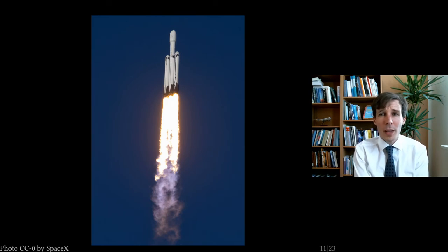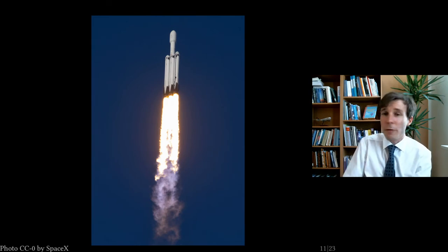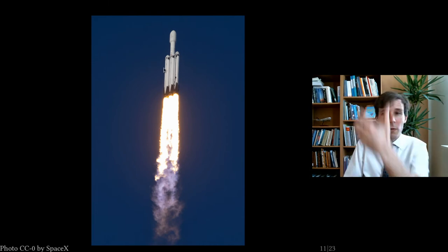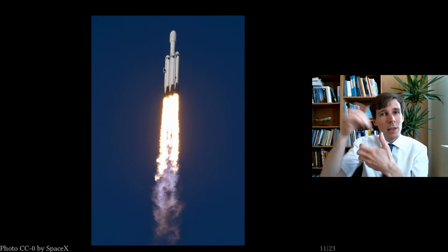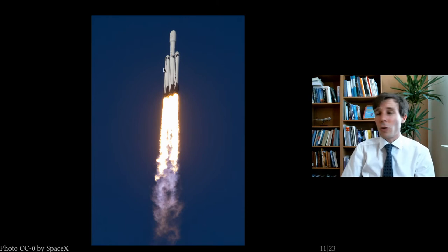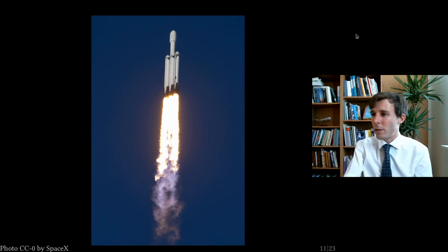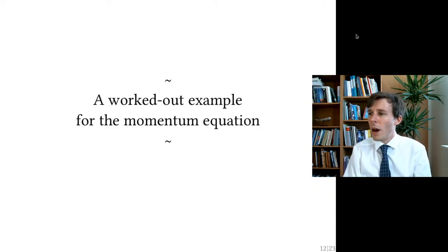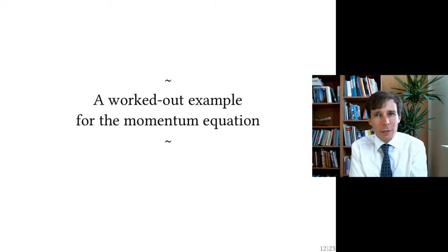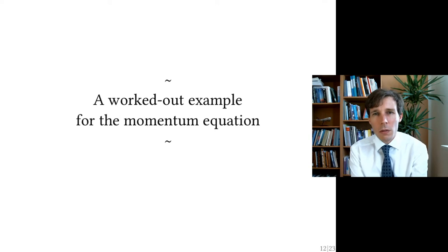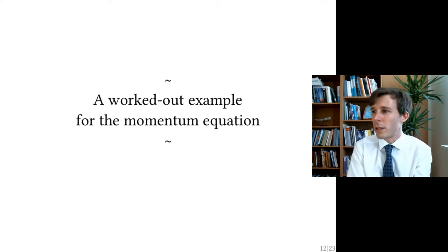A rocket is a typical example: if you draw a control volume surrounding the rocket completely and move along with it, you have zero incoming velocity and all velocity is outgoing, so a net force results. Instead of showing more pictures and equations, let me show how this equation works in practice.